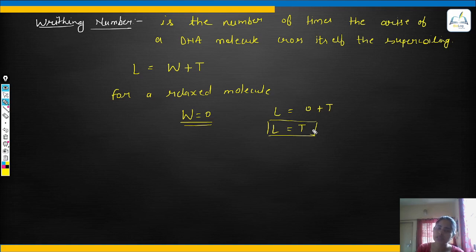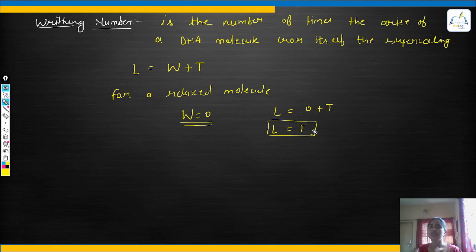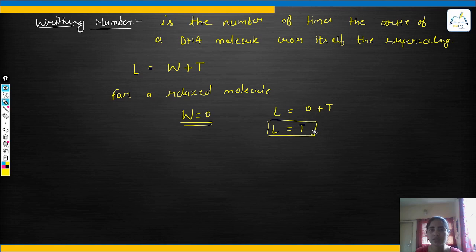If the linking number is changing, it means that DNA topology is changing. So we can find out how much enzymatic action is occurring on the DNA. This is the benefit of calculating the linking number. I hope this topic is very helpful for you and will help with numerical solutions. Please hit the like button if you liked this video, share it, and subscribe to my channel. Thank you so much.